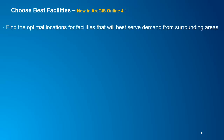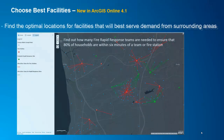The tool Choose Best Facilities helps us find the optimal locations for facilities that can best serve demand from surrounding areas. For example, these facilities can be fire stations — where are the best locations to build new fire stations so that 80% of households in the area are within 6 minutes drive time of a fire station.